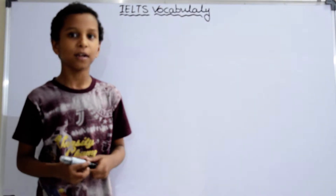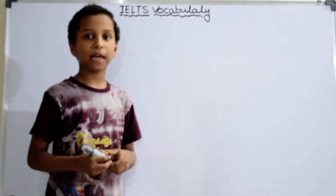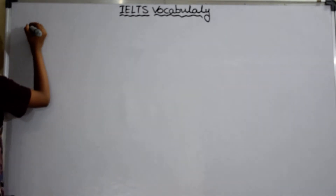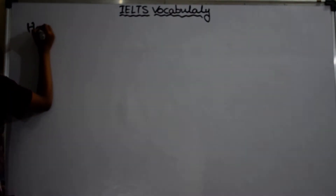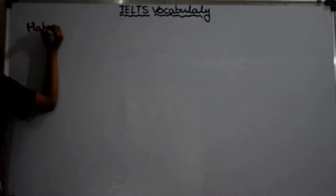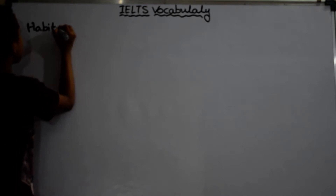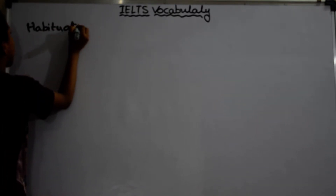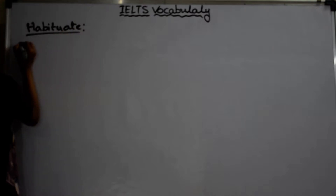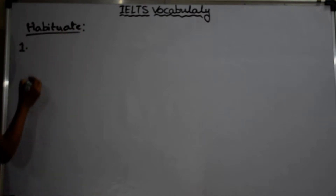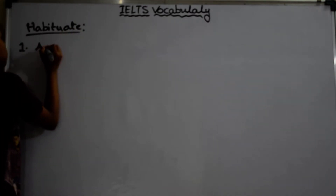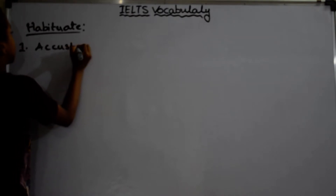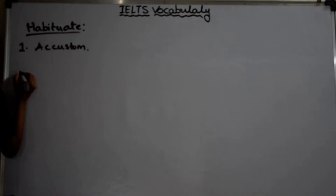Hi, I am Jai Panjashat. I would like to explain about the word habituate. Let's start. The spelling is H-A-B-I-T-U-A-T-E. Habituate. Its meaning is accustom — A-C-C-U-S-T-O-M — accustom.